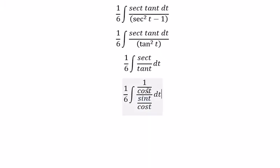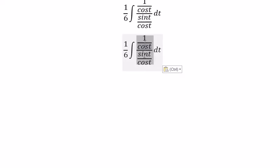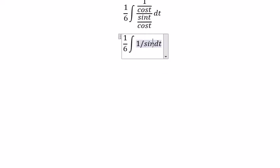We simplify cosine t, and we got about 1 over cosine t and we can put about cosine t.